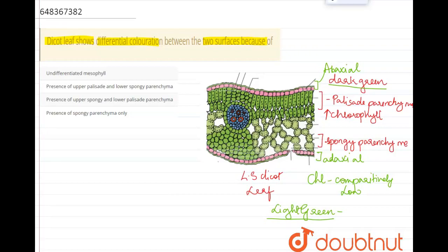Also, there is one more reason for this. When the leaf is exposed to sunlight, the adaxial surface is not as exposed as much as the abaxial surface is exposed to the sunlight.